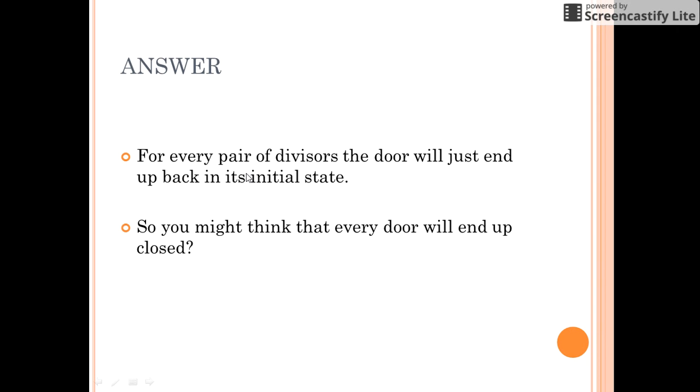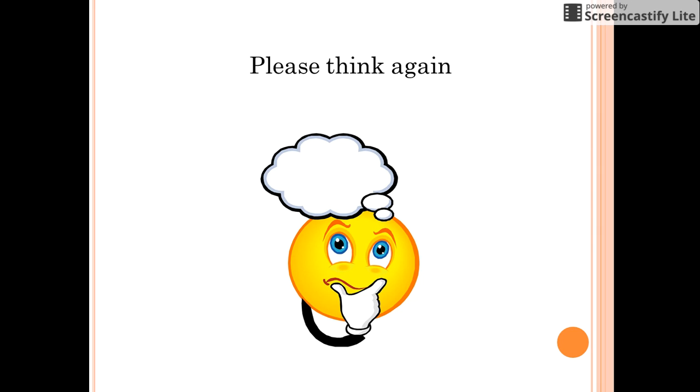So for every pair of divisors, the door will just end up back in its initial state. We might think that every door will end up closed when we have passed 100 times in the row of doors. But please think again, which doors must be open now?